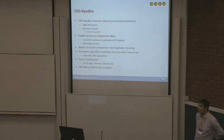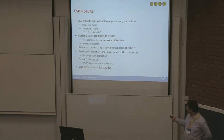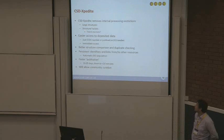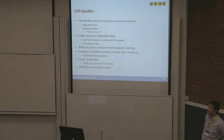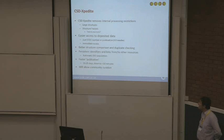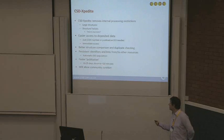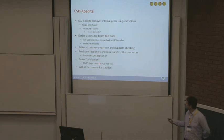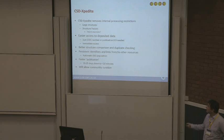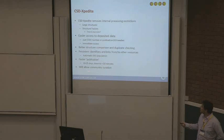Expedite has brought us lots of advantages. Similar to the challenges at the PDB, the CCDC also faced challenges with large structures. Expedite has allowed us to handle structure factors much more appropriately than before. We can now provide much easier access to deposited data, can better compare and check structures, and we're in a position to issue DOIs for CSD entries. Perhaps most dramatically, we can now take a structure from deposition to release in less than 10 minutes for a straightforward structure. In the past, the quickest we could do that was around 10 days — it could take up to a month. This has really transformed the way we operate, and it also allows us to enable community curation.